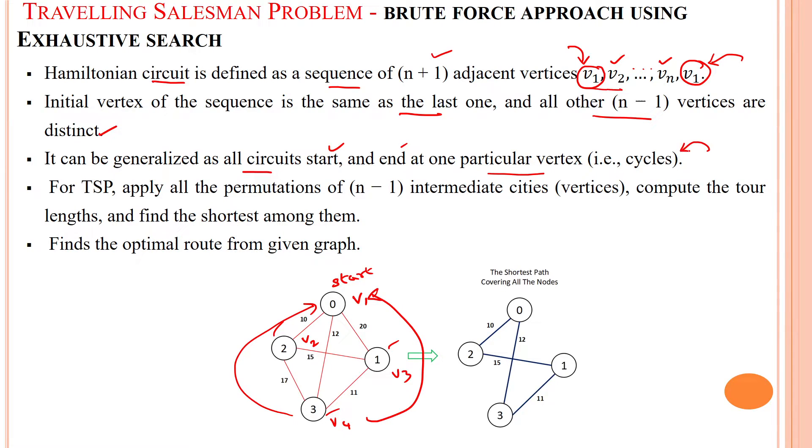That means it is forming the cycle. You look at here, he has started from the 0th location, then he has visited all the cities 1, 2, 3, again return back to the starting city. So that is forming the cycle.